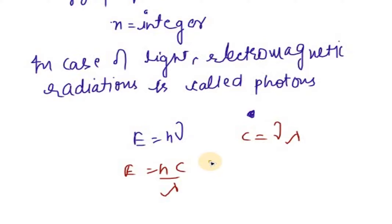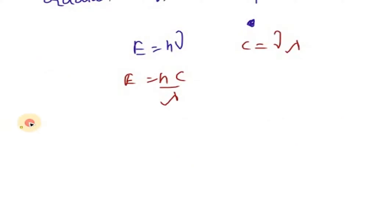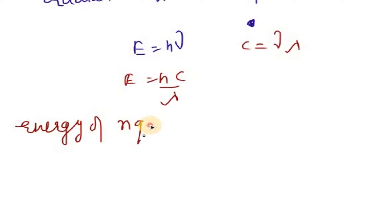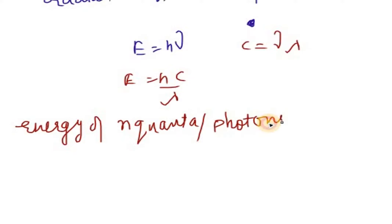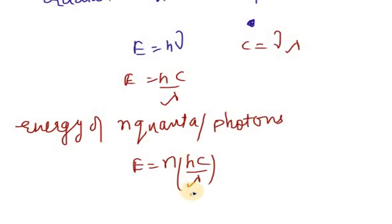For light specifically, the energy packets are called photons. The energy of N quanta or photons in case of electromagnetic radiation is E = N × HC/λ.